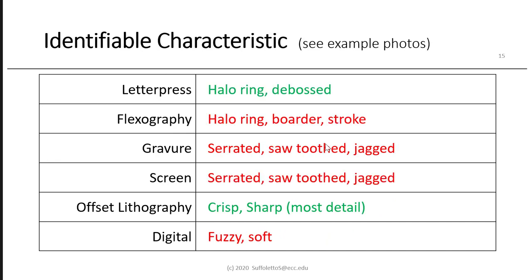We should be able to identify any printing process by its characteristics under magnification. In letterpress, the outer edges have a halo ring. In flexography, there's also a halo ring, but it's much broader and wider — like a stroke applied to it. In gravure, the edges are serrated, sawtoothed, and stair-stepped. Screen printing is similar to gravure with that serration and sawtooth pattern from the mesh threads. Offset lithography is extremely crisp and sharp — the most detail of any printing process. In digital, because of electrostatic charges or sprayed fluid, the edges of type can be soft and fuzzy.